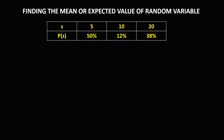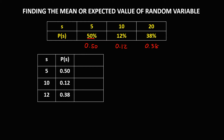For this given, first we need to convert the percentages to decimals. So 50% in decimal is 0.50 or 0.5. This 12% is 0.12 and 38% is 0.38. Then put this one in a table form.